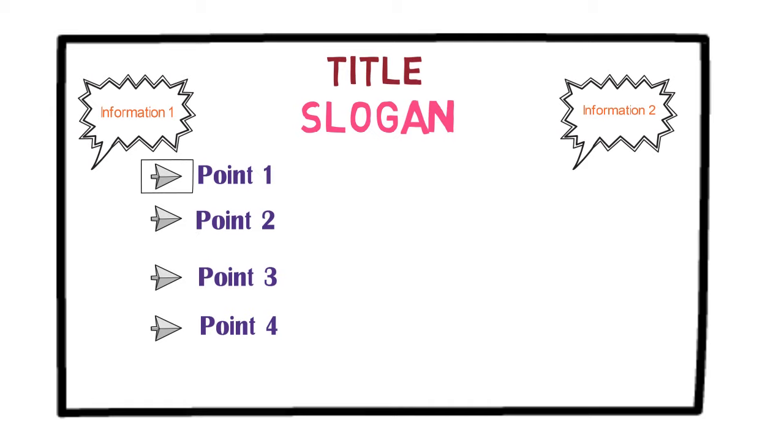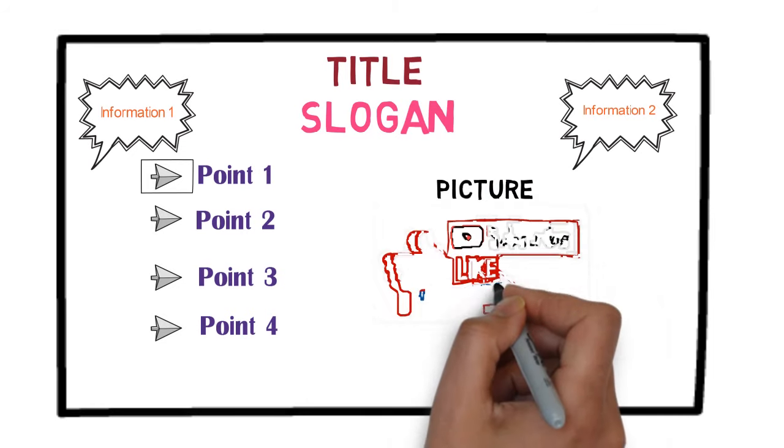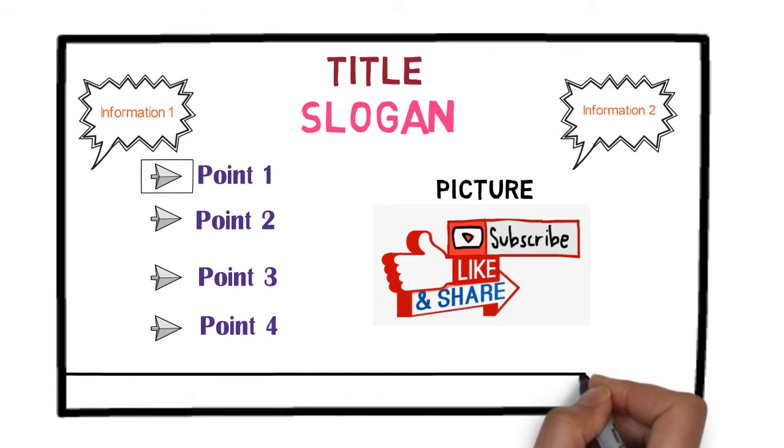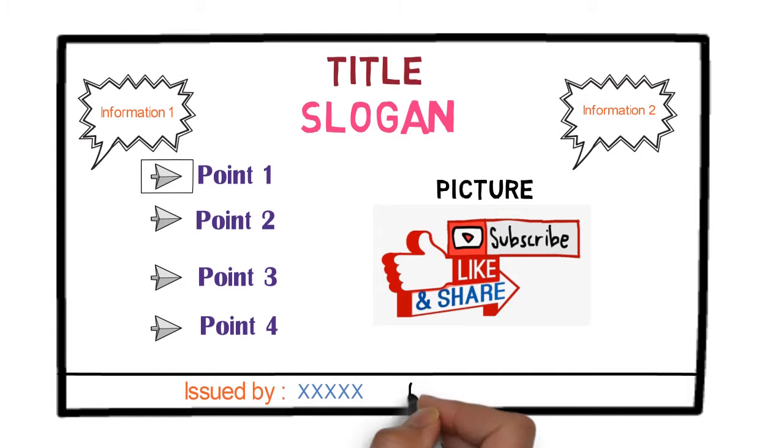Now, below the second bubble and right next to the bulleted points, draw a picture related to the theme. Finally, draw a line after the bullet points and mention in this box the issuing authority or the person or organization who has issued this poster and the reason for issuing it. You may add some brief information here if required.